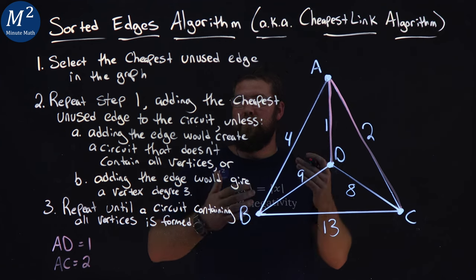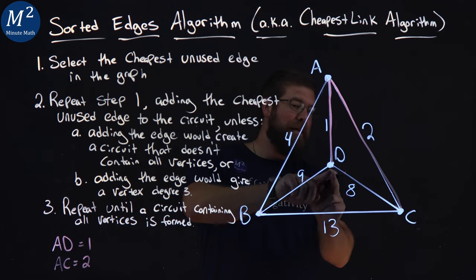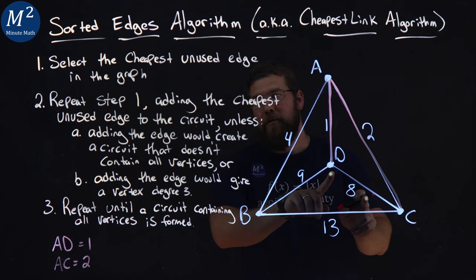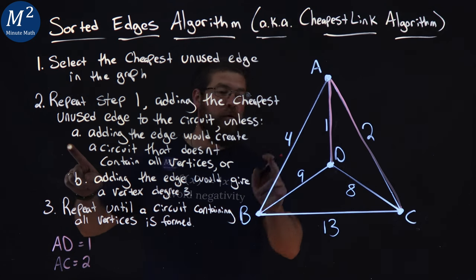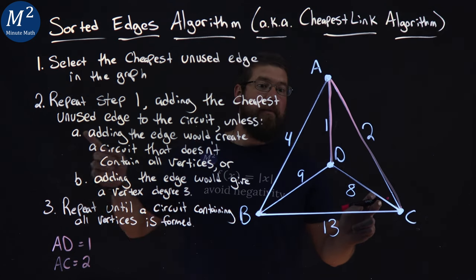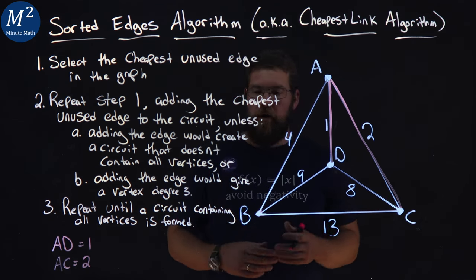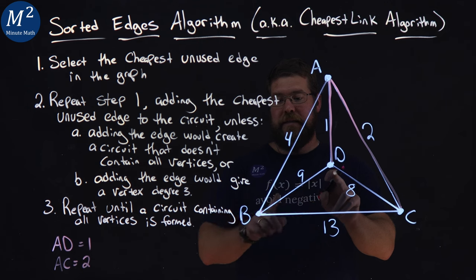Next one. Next cheapest unused edge would be DC, weight of eight. But that fails here, part A. It would create a circuit, and we don't have all the vertices connected yet. So the next cheapest one would be DB.